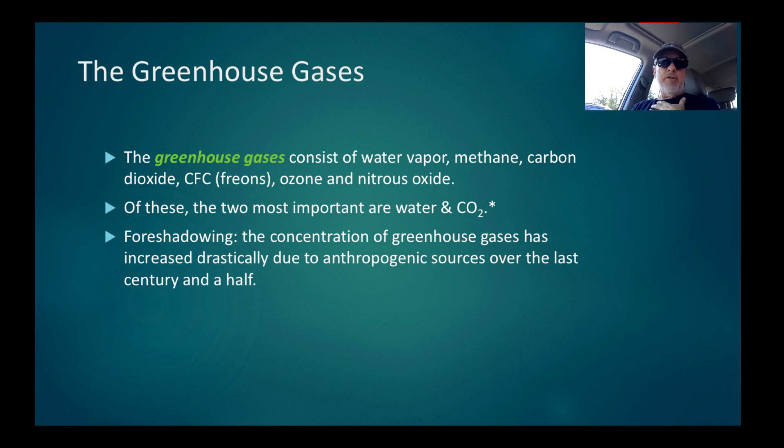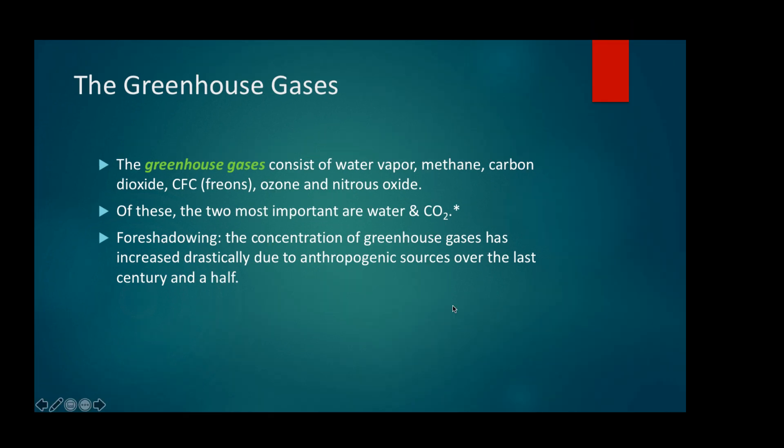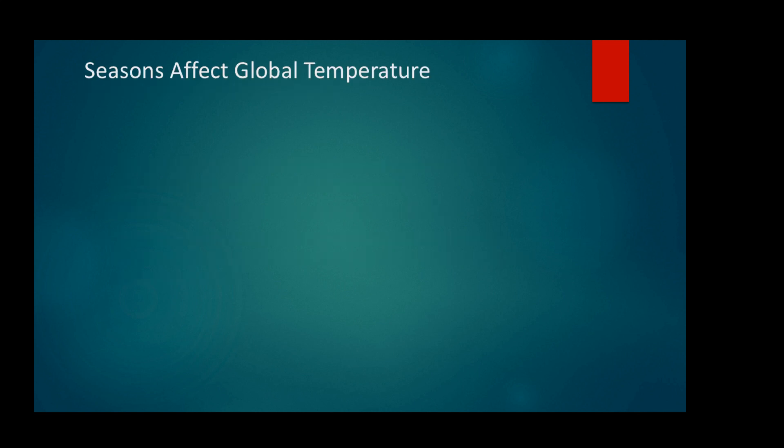Now, foreshadowing, we're not going to talk about it this much this unit, but the next unit, the climate change global warming unit, the concentration of greenhouse gases has increased drastically due to anthropogenic sources over the last century and a half. Some people try to debate that, but the data is indisputable. That's it for this talk. Tomorrow we will go on to talking about seasonality and how seasonality affects global temperature. But until then, don't forget, study hard.